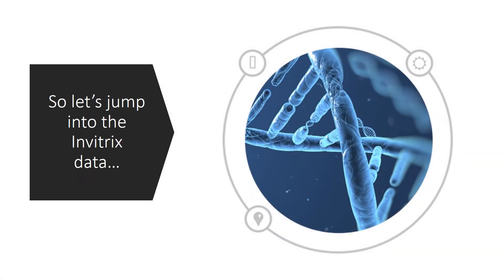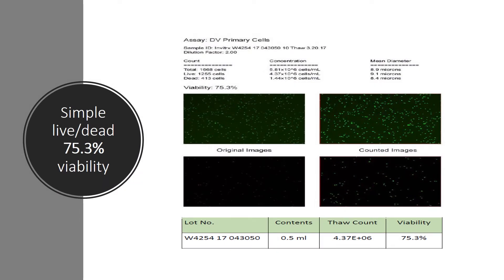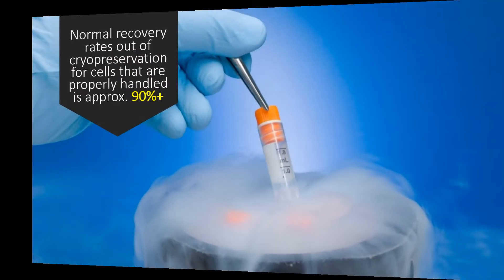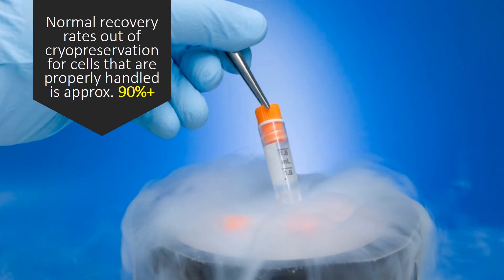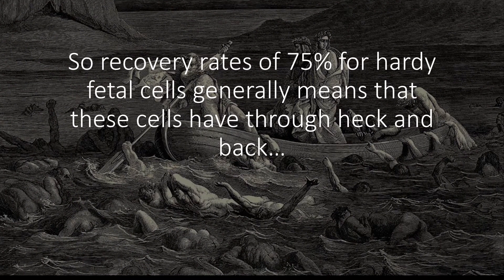So let's jump into the Invitrix data. First, we see a simple live-dead stain with 75% viability. The problem with that viability data is it places healthy and dying cells into the exact same category, so we have no idea what we're dealing with. Normal recovery rates out of cryopreservation for properly handled cells are 90% or higher, so seeing 75% tells you there are issues — basically that these cells have been through heck and back.